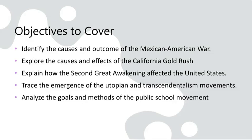The 19th century also witnessed the emergence of two distinctive intellectual and social movements: utopianism and transcendentalism. Utopian communities, such as the Oneida community and Brook Farm, aimed to create ideal societies, often emphasizing communal living and shared labor. While most of these experiments were short-lived, they reflected a desire for societal change. Transcendentalism, led by thinkers like Ralph Waldo Emerson and Henry David Thoreau, stressed individual intuition, nature, and self-reliance. Their writings had a profound influence on American literature and philosophy, and contributed to a cultural movement that questioned established norms and values.